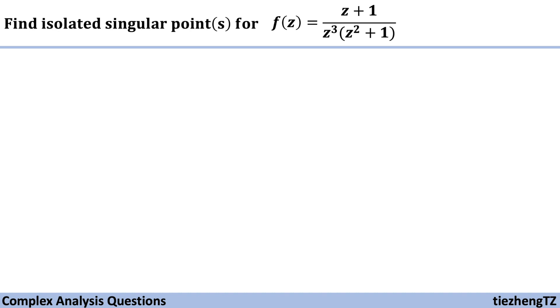This question is to find the isolated singular points for this given function, f(z) equals (z+1) over z cubed times (z squared plus 1).